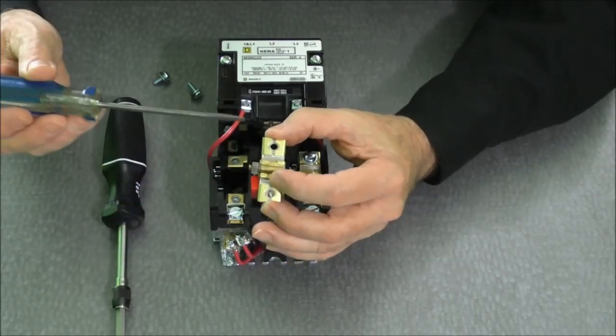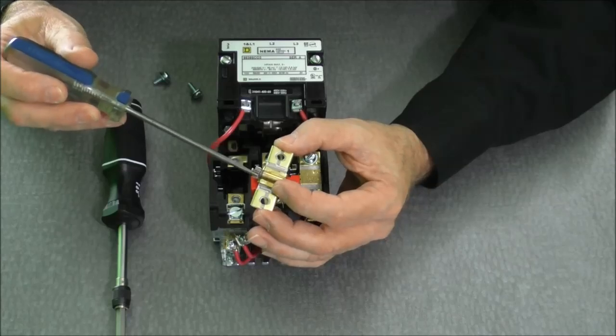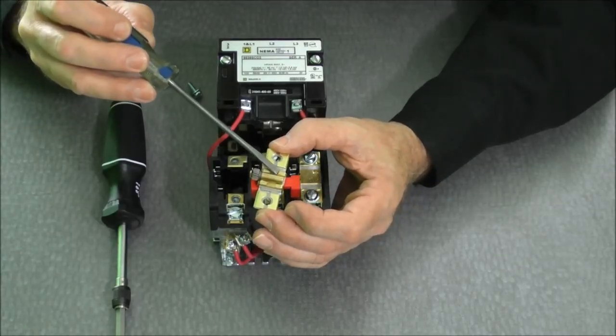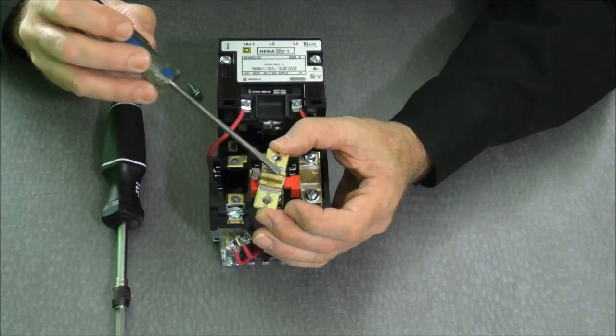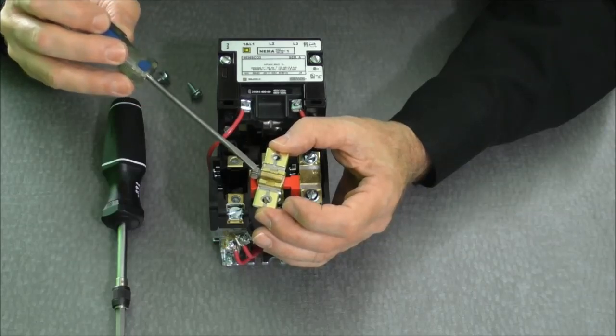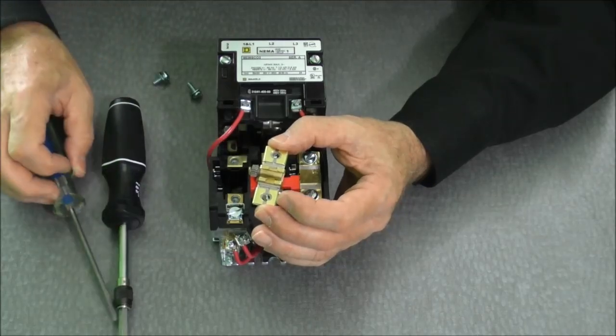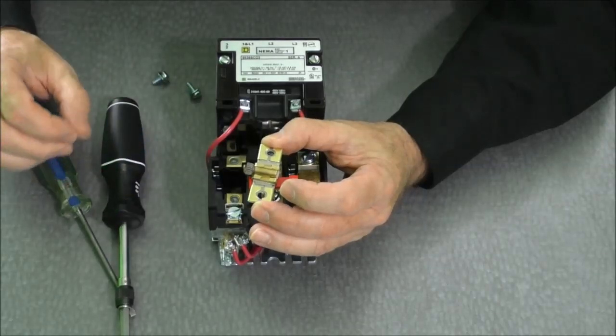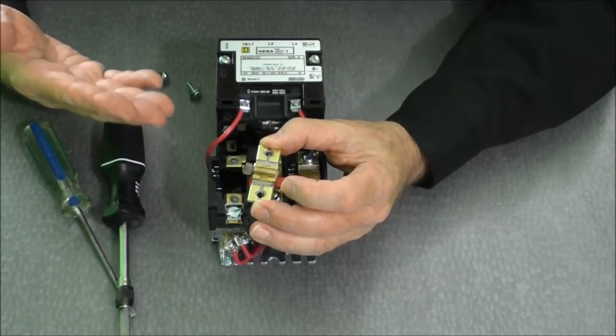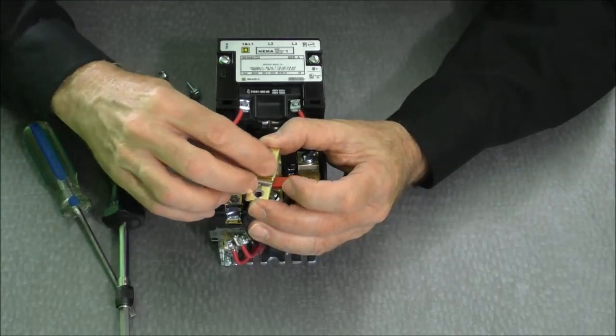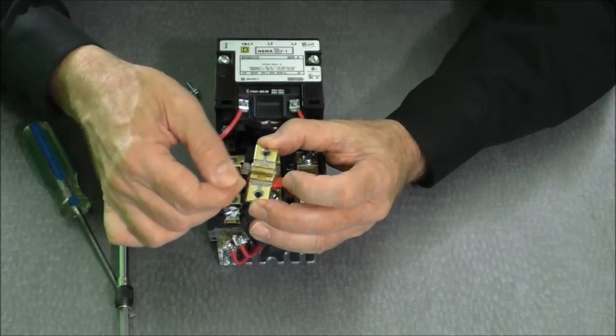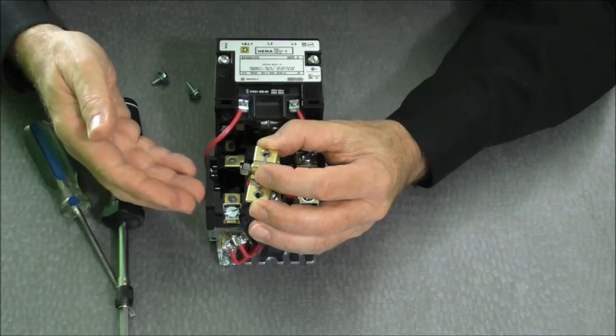Right here we have something we refer to as a star wheel. This star wheel is connected to a shaft that will go into a solder pot, and in that solder pot is a solder that will hold the shaft attached to that star wheel and prevent it from turning. If we have an overload condition, we generate too much current. The current creates heat, which will melt the specific melting point of the solder. It will turn the star wheel and trip the overload.